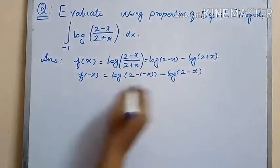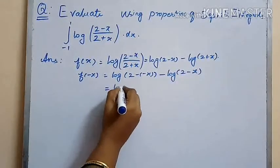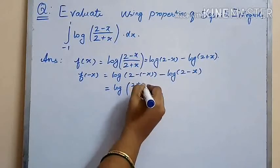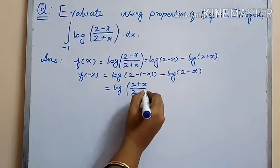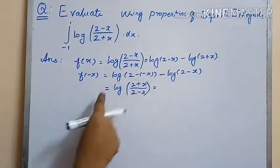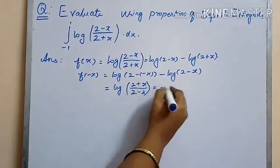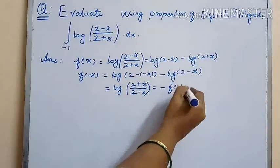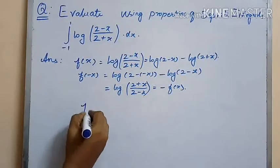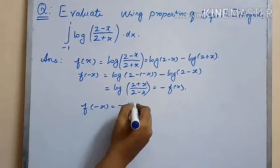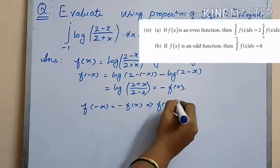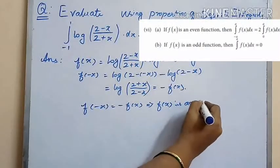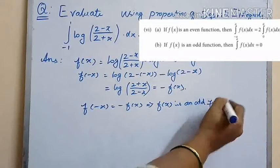Now f(−x) equals log(2 minus (−x)) minus log(2 plus (−x)), which is log(2 plus x) minus log(2 minus x), which is log((2 plus x)/(2 minus x)). This is actually the reciprocal of f(x), so f(−x) is equal to minus f(x), which implies f(x) is an odd function.